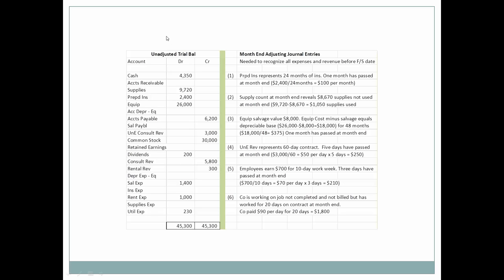In Chapter 2, we ended at the Unadjusted Trial Balance, where we had all of the accounts with their relative debit and credit balances at the end of the journal entry process. The journal entries are related to transactions with outside or external parties. Adjusting journal entries, on the other hand, are internal journal entries that an experienced accountant knows needs to be made as a result of external transactions, as well as transactions that are taking place within the company.